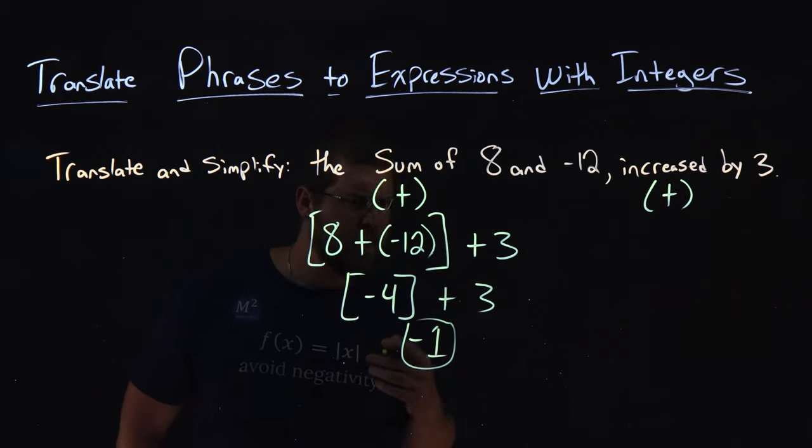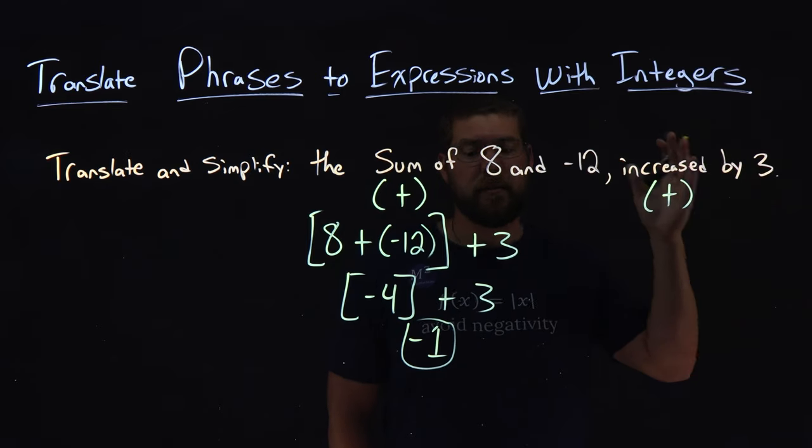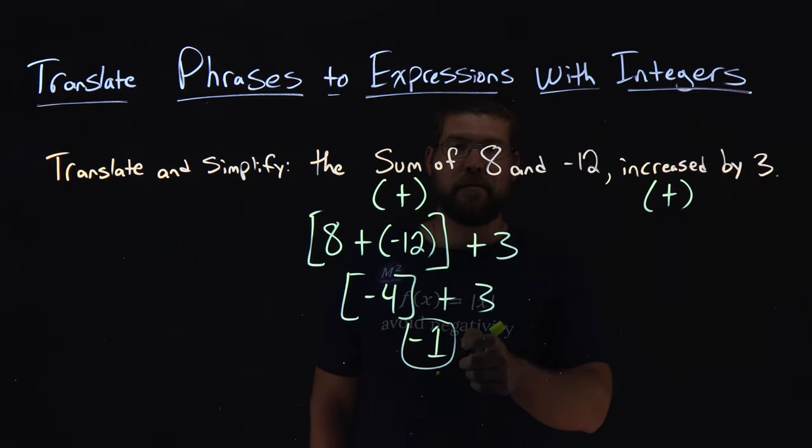And we're kind of done here. So we learned that the sum of 8 and negative 12 increased by 3 simplifies to be a negative 1.